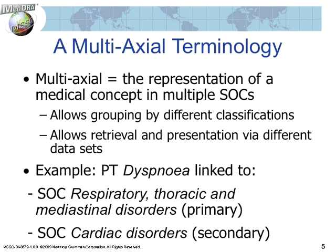One example of a multi-axial term is the preferred term dyspnea. It has a link to both SOC respiratory, thoracic and mediastinal disorders — its organ system of manifestation — and to SOC cardiac disorders because of its connection to heart disease. The respiratory SOC is designated as its primary SOC, and the term also has a secondary link to SOC cardiac disorders.